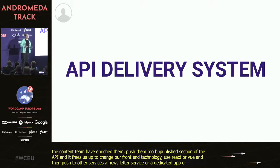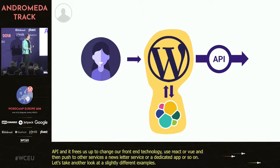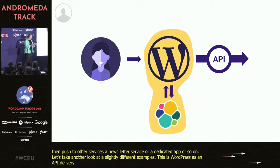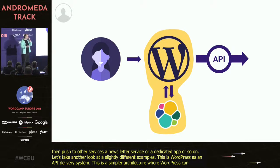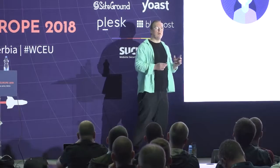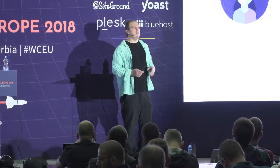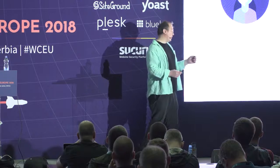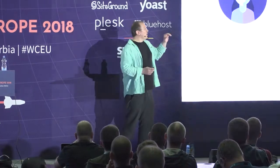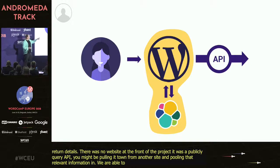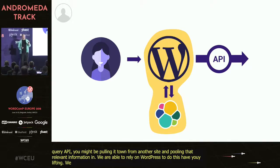Let's look at a slightly different example — WordPress as an API delivery system. This is a simpler architecture where WordPress can do the heavy lifting because there's no user management or e-commerce. This is for a startup showing details about swimming pools all over the world — so you might be in Belgrade looking for a pool close to the venue open after 7 o'clock. There was no website at the front; it was a publicly queryable API. You might pull this from another site, a widget, or some other service.